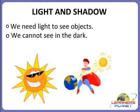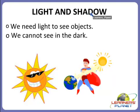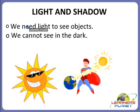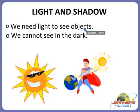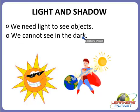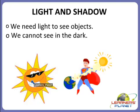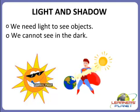Now children, we will study about light and shadow. We need light to see the objects around us, and we also know that we cannot see in the dark. The sun gives us light to see the objects, but when there is no sun, we get light from other sources.